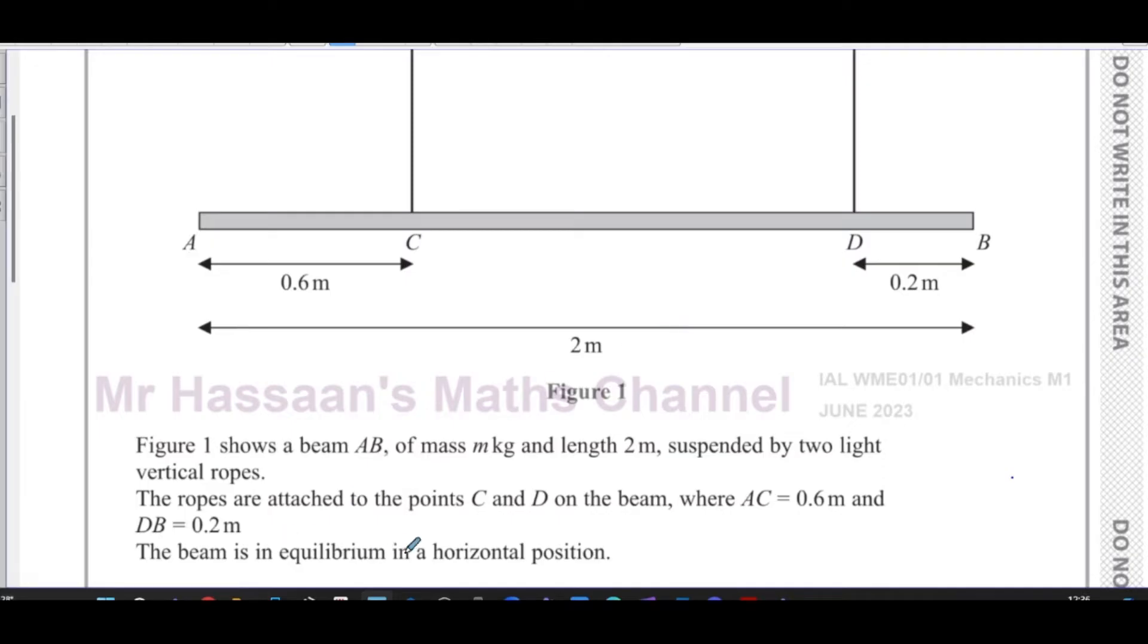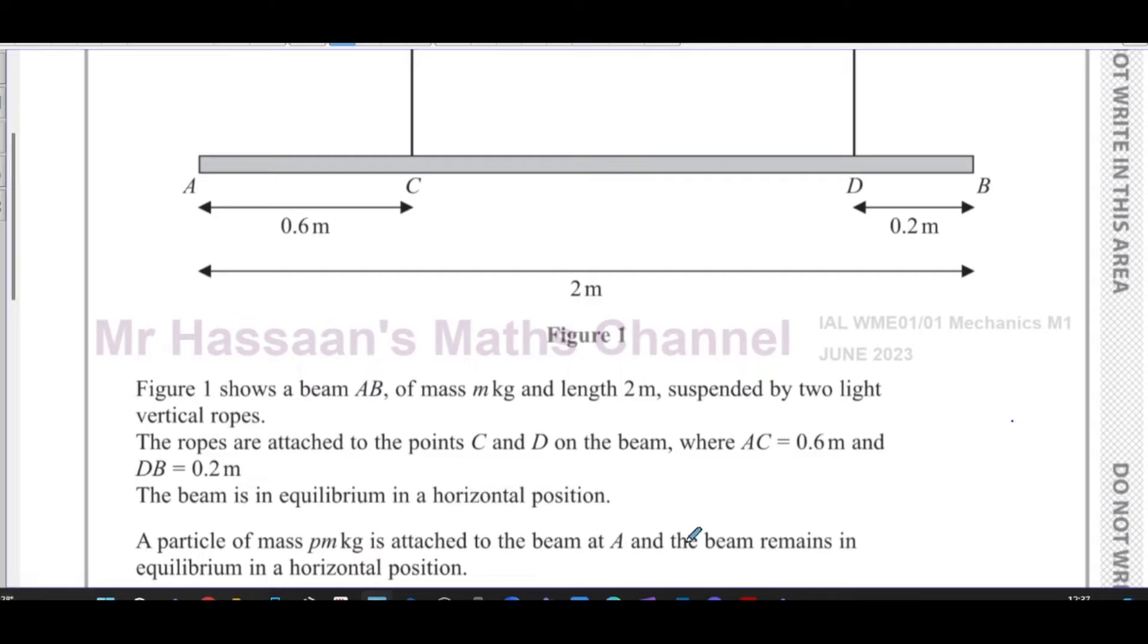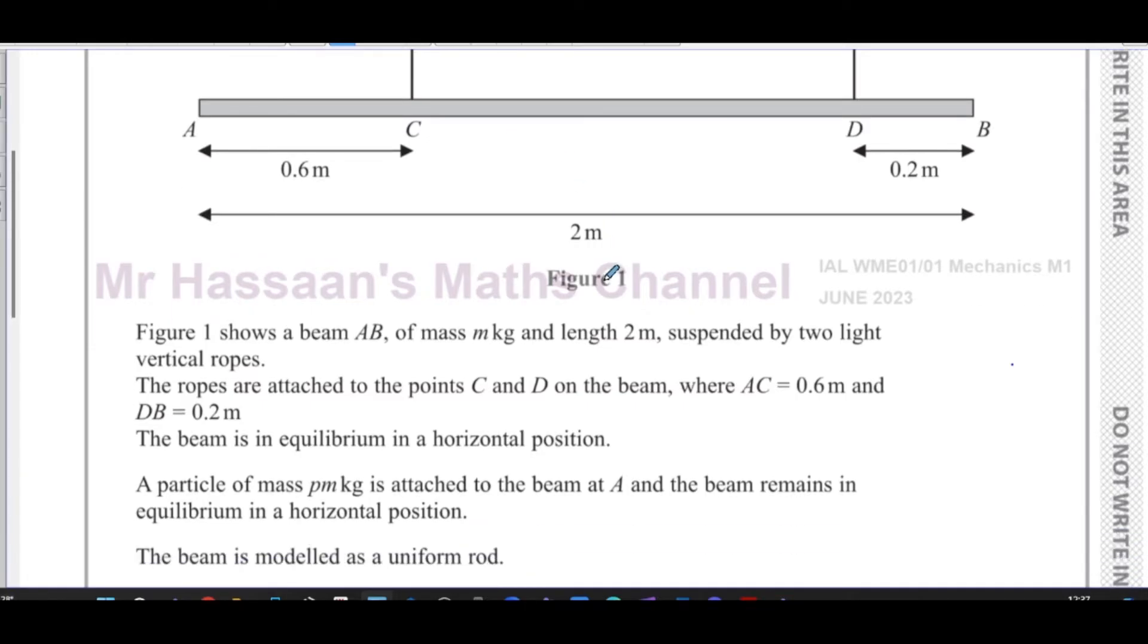The beam is in equilibrium in a horizontal position. A particle of mass Pm kilograms is attached to the beam at A and the beam remains in equilibrium in a horizontal position. The beam is modeled as a uniform rod.